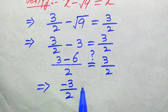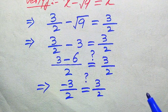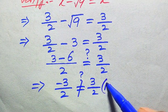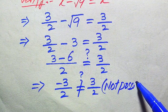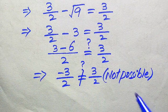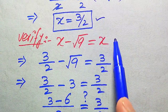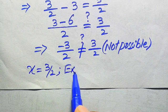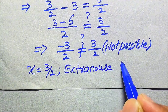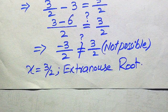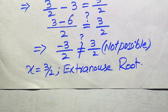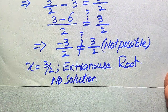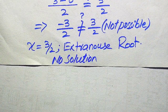So we get minus 3 over 2 equals 3 over 2. This is negative on the left and positive on the right — these two terms are not equal. It is not possible that minus 3 over 2 equals plus 3 over 2. This means x equals 3/2 does not satisfy our given equation, so x equals 3/2 is an extraneous root. Since there is no valid value of x, this equation has no solution.